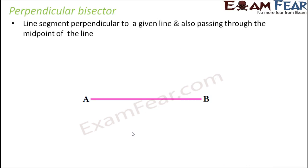Now that we have learned about perpendicular, let's talk about perpendicular bisector. What is a bisector? Something which bisects — that is, something which divides a particular thing into two equal halves. So a perpendicular bisector is a line segment that is perpendicular to a given line and also passes through the midpoint of the line. In short, it is not only perpendicular to the line but also divides it into two equal halves.